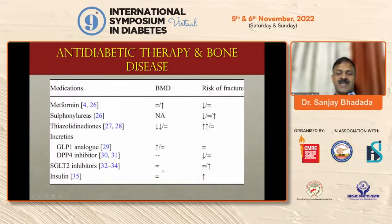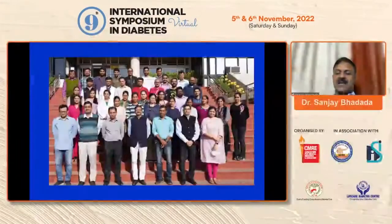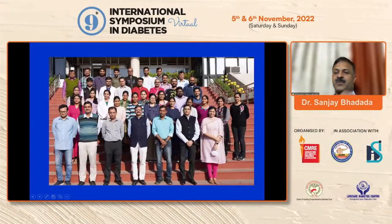Regarding anti-diabetic drugs and bone: metformin is neutral, but thiazolidinediones are associated with decreased bone mineral density and increased fracture risk, so they should be avoided in patients with osteoporosis or fragility fracture history. SGLT-2 inhibitor data is not yet available. GLP-1 analogs are preferred for better bone health. In conclusion, diabetes is associated with increased fragility fracture risk — more so in type 1 than type 2. Bone quality is compromised in both cortical and trabecular bone. Fracture outcome is poor in diabetic individuals, and the drug of choice for osteoporosis in diabetes is not yet clear but results are forthcoming.